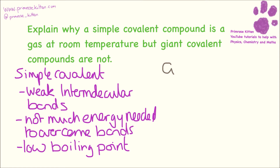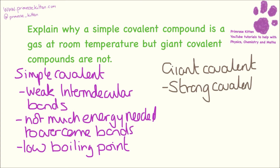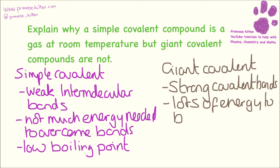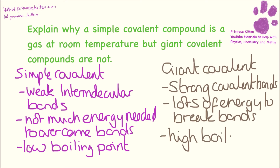Moving on to giant covalent. Now, giant covalent — we're talking about things like diamond or silicon dioxide. These are going to have strong bonds, and if they have strong bonds, they're going to require lots of energy to break the bonds. If it requires lots of energy to break bonds, they are going to have a high boiling point, so they will be a solid at room temperature.